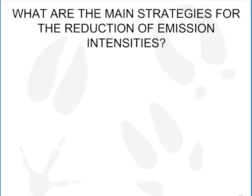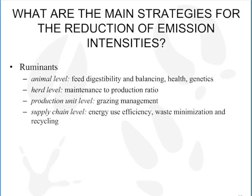The results reveal that the main strategies for reducing emission intensity in livestock supply chains differ between ruminants and monogastrics. For ruminants at the animal level, feed digestibility and balancing, health management, and genetics were estimated to have the greatest impact. At the herd level, it is the maintenance-to-production ratio. At the production unit level, grazing management is significant. And at the supply chain level, it's about energy use efficiency, waste minimization, and recycling.